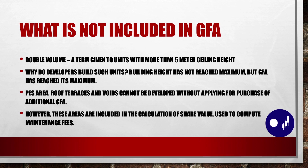So what is not included in GFA? Double volume — a term given to units with more than 5 meters ceiling height. So why do developers build such units? Building height probably has not reached its maximum, but GFA has been maxed out. PES area, roof terraces, and voids cannot be developed without applying for purchase of additional GFA. However, these areas are included in the calculation of the share value used to compute maintenance fees.